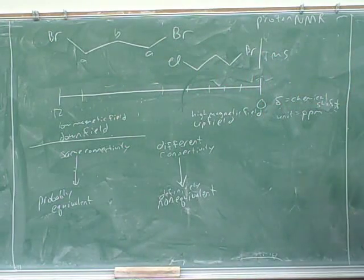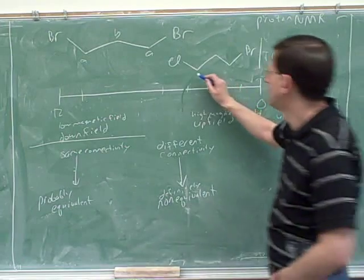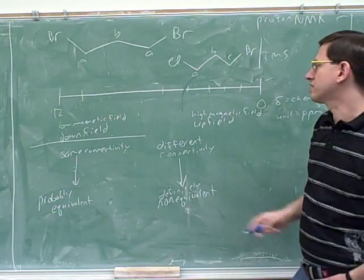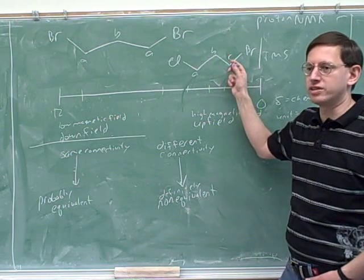And how many peaks here? Because now we've lost the symmetry. Now that we've lost the symmetry, these three groups are not equivalent to each other anymore.